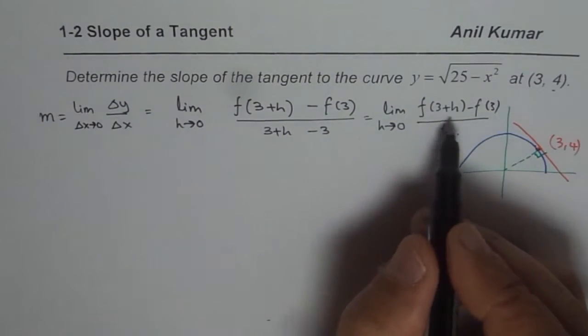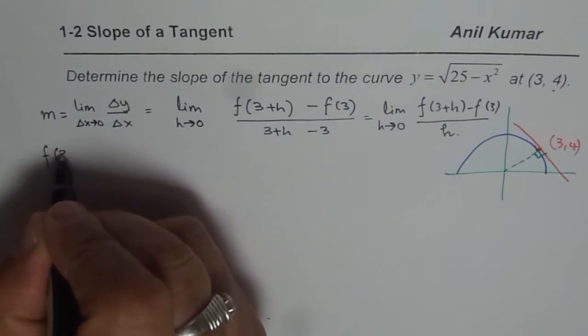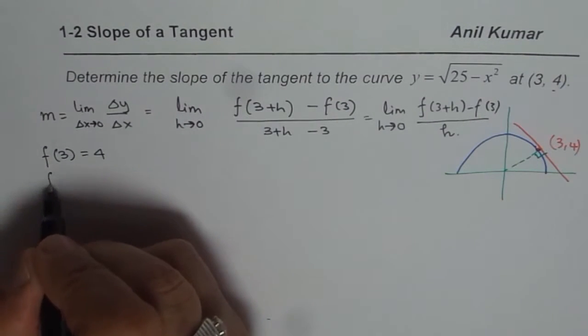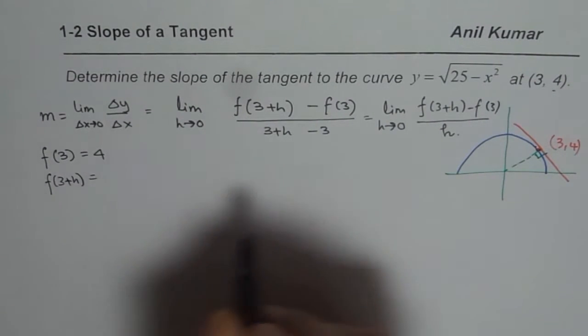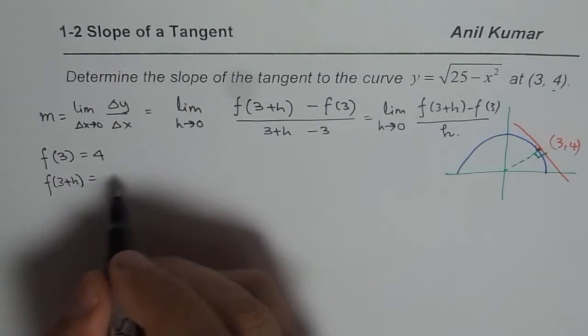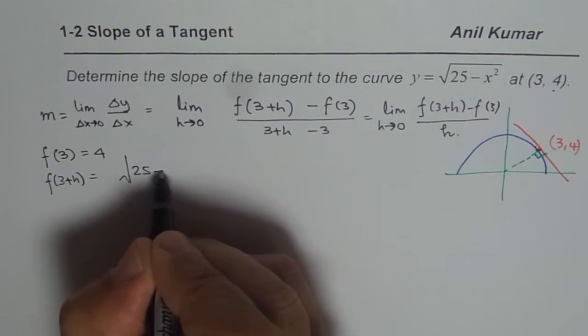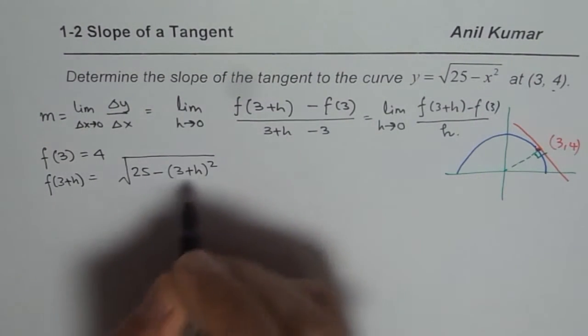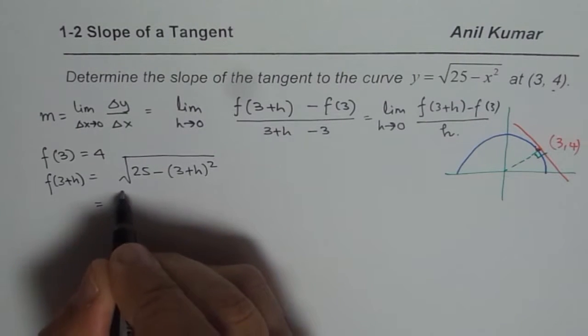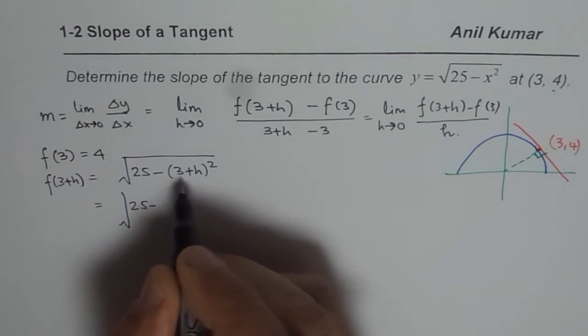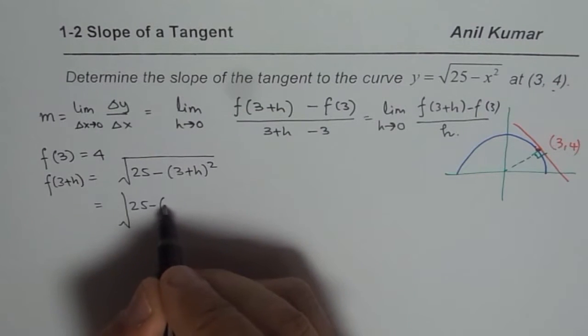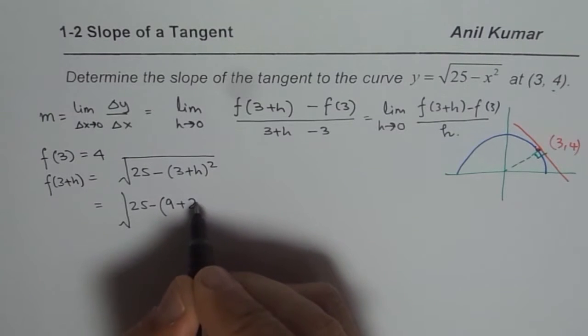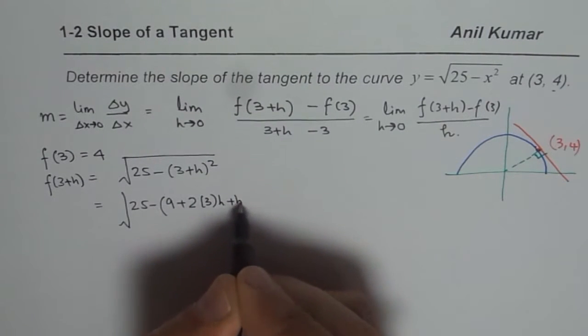Now let us find f of 3 plus h. So we know that f of 3 is given to us as 4. You can also substitute and verify. But f of 3 plus h is something which we have to find out. So that would be square root of 25 minus 3 plus h whole square. So we can just expand and simplify this one. So we get 25 minus 9, 3 square, plus 2ab which is 2 times 3 times h plus h square.